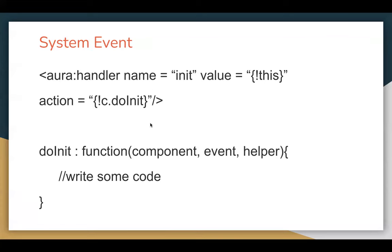Next is system event. You don't need to use any markup or tag. You just need to register the event like: aura:handler name equals to init. This is your system event, with value equals to this and action equals to c.doInit. This doInit is a function you need to define in the JavaScript controller. Init is basically short for initialize. Whenever your component loads in the browser, this method executes automatically and whatever code you write in doInit will be executed and results generated. I will also demonstrate this in a separate module with a proper example.